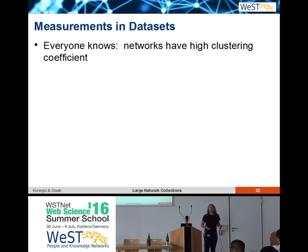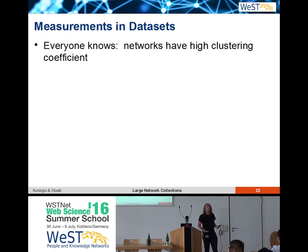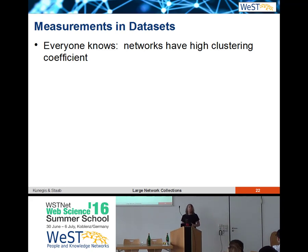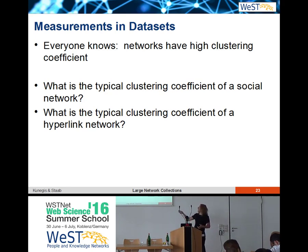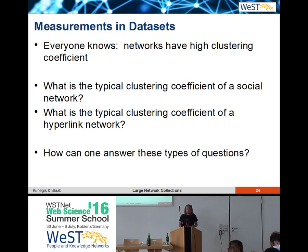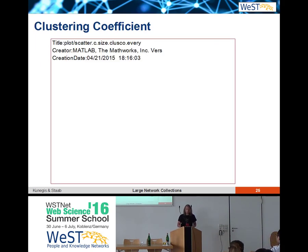We can also verify things that are sometimes taken for granted. For instance, we always hear that social networks have a high clustering coefficient — meaning that two of my friends are more likely to be friends with each other than two random people from the population. This has been analyzed many times. We can ask: do social networks have higher clustering coefficients than other types of networks, like hyperlink networks? How can we answer these types of questions?